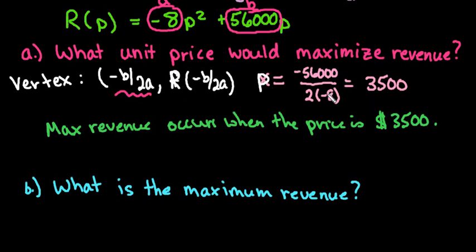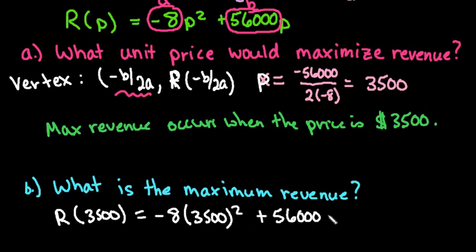So we would just plug in our x coordinate or in this case, the unit price. So the maximum revenue we would just find R of $3,500. So that tells us that we're going to plug in negative eight times 3,500 squared plus 56,000 times 3,500.